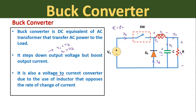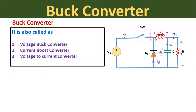This buck converter has three names. First, it is called a voltage buck converter because the output voltage is smaller than the input source voltage Vs. Second, it is also called a current boost converter because the output current or load current will be greater than the input current Is. Third, it is a voltage-to-current converter because of the presence of the inductor which opposes the rate of change of current through it.